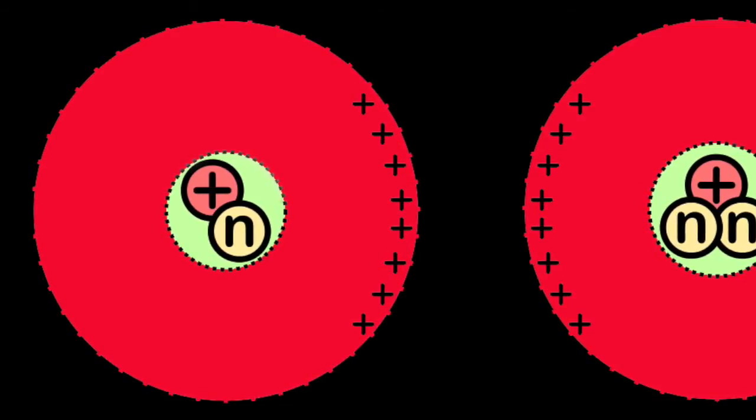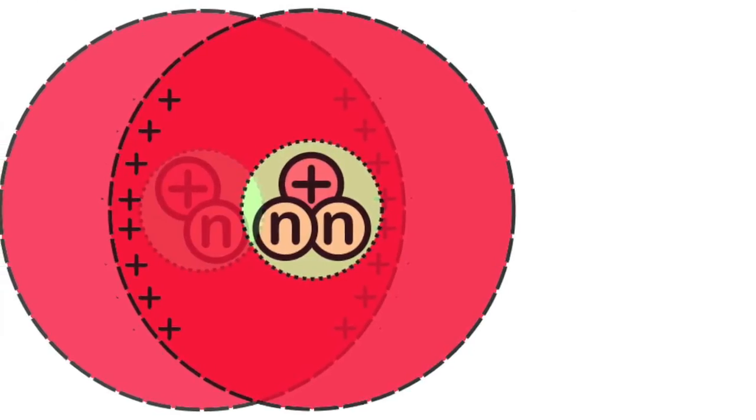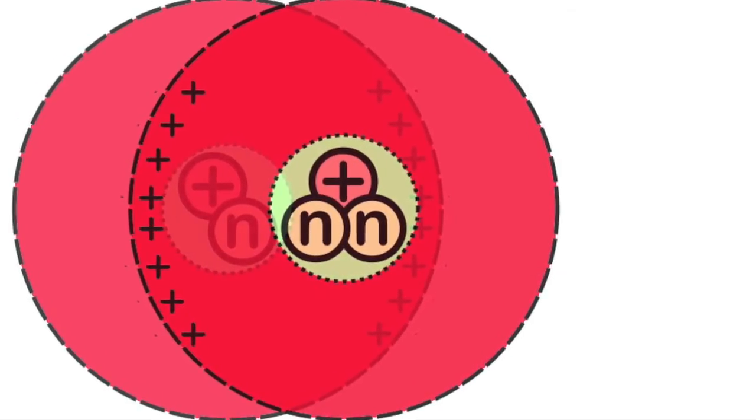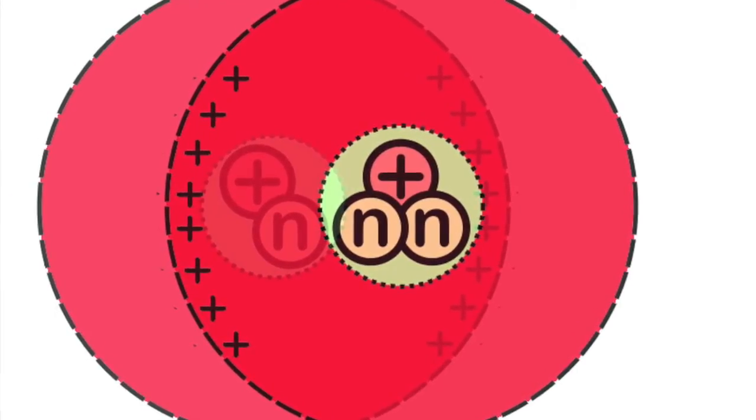So, the only way we can get two small nuclei to fuse is to bang them so hard together that the strong forces can interact. And for that, they have to be going very fast.